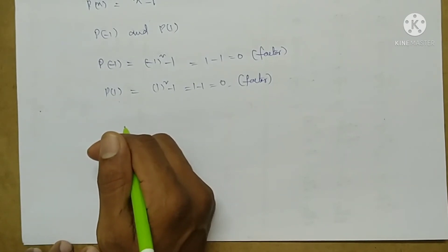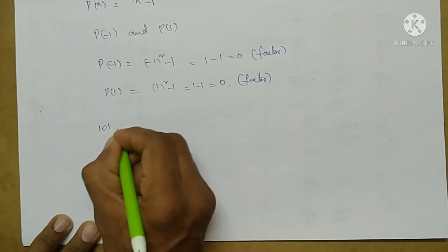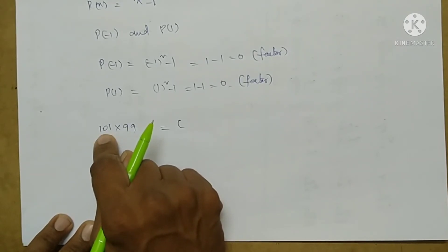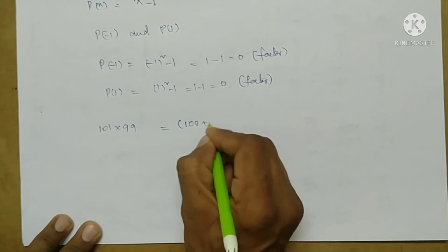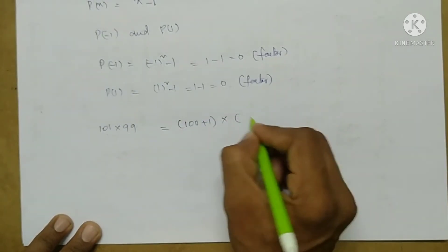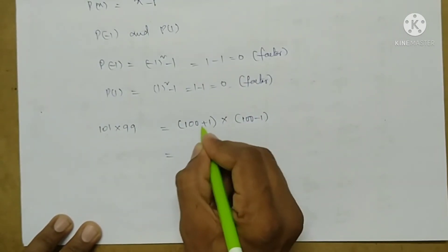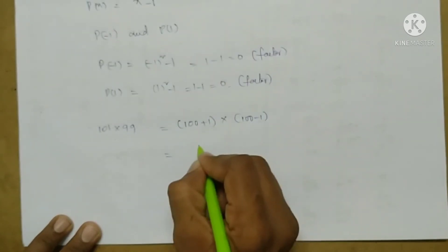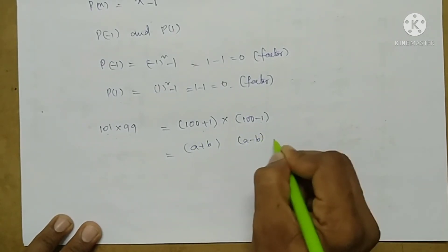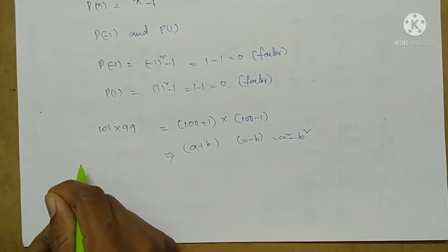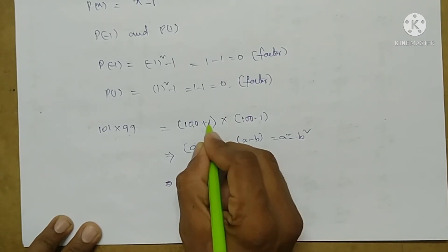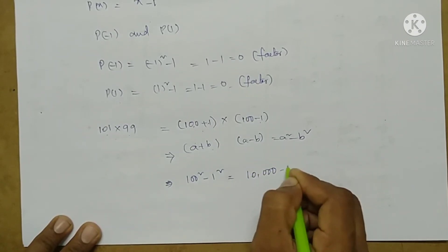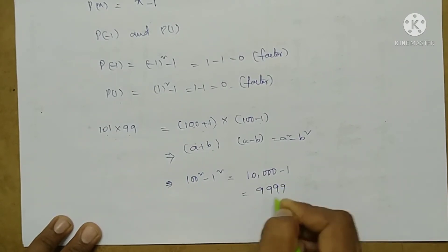Next model: without actual multiplication, solve 101 into 99. Write 101 as 100 plus 1 and 99 as 100 minus 1. This is of the form A plus B into A minus B, whose result is A square minus B square. Here A equals 100, B equals 1. So 100 square minus 1 square equals 10,000 minus 1, and the result is 9,999.